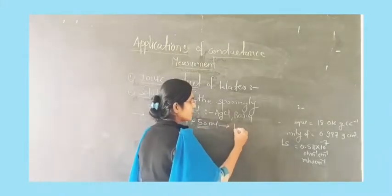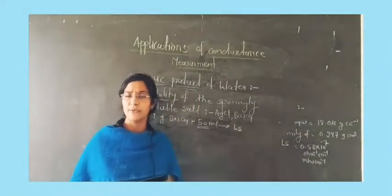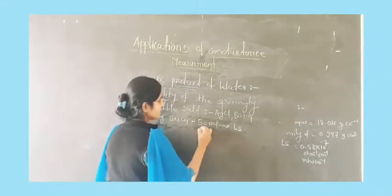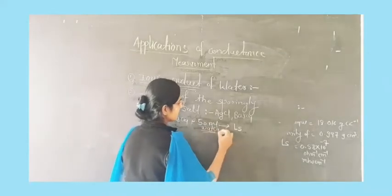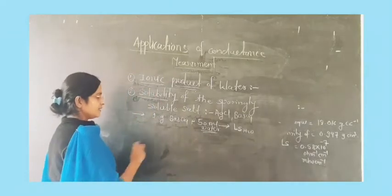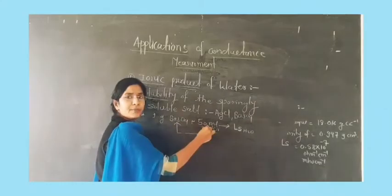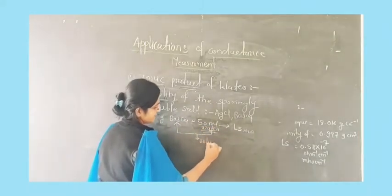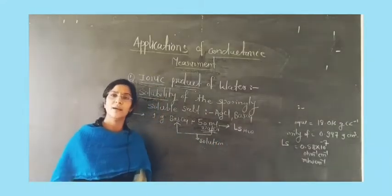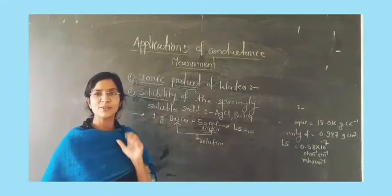We should know the specific conductance of water, that is Ls of water. When I mix barium sulphate into 50 ml of water, I get a solution. By using the conductivity bridge, I am able to measure the conductance of the solution.